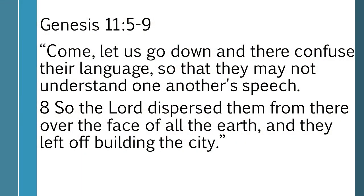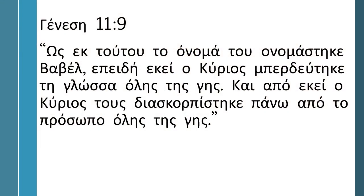God has begun a global plan for nation and tongue. Verse 7 says: 'Come, let us go down and confuse their language.' The 'let us' is the triune God at work — the Father, the Son, and the Holy Spirit working together. 'Let us confuse their language so they may not understand one another's speech.' And so the Lord dispersed them over the face of all the earth, and they left off building the city. Therefore its name is called Babel, because the Lord confused the language of all the earth. And from there the Lord dispersed them over the face of all the earth.